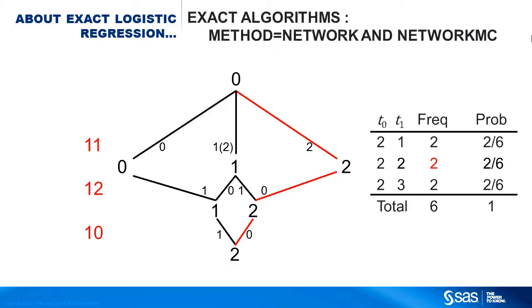Of the algorithms just discussed, the network algorithm creates the exact distribution faster using less memory. If you change the order of the variables and the observations, you can get a different network, which can certainly affect performance, positively or negatively.